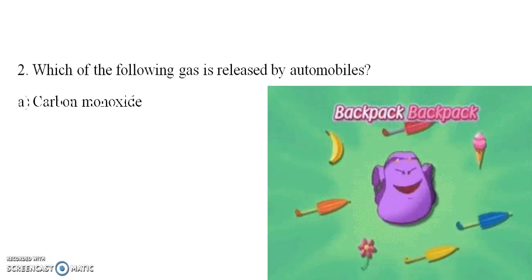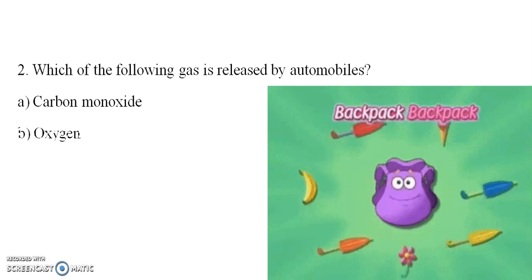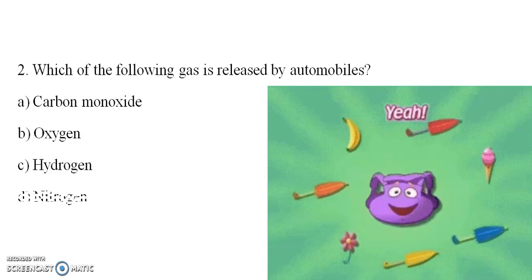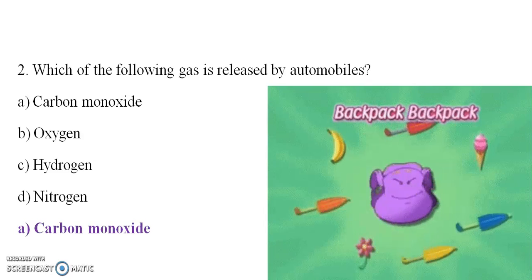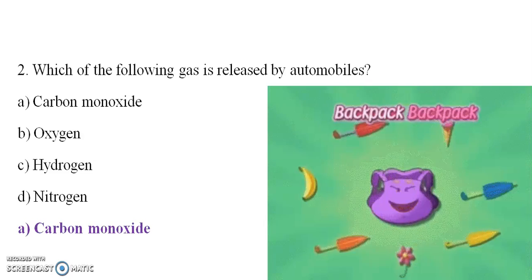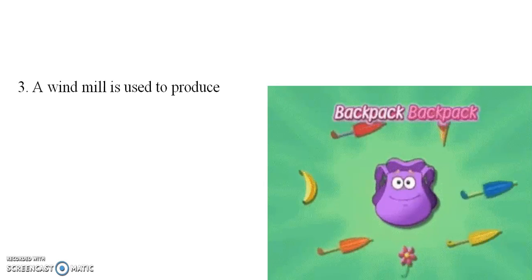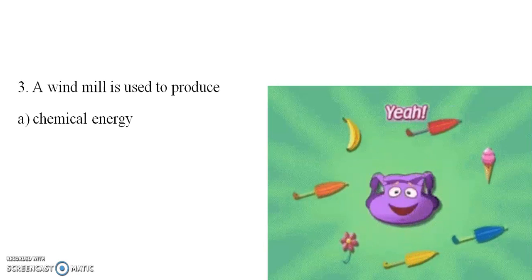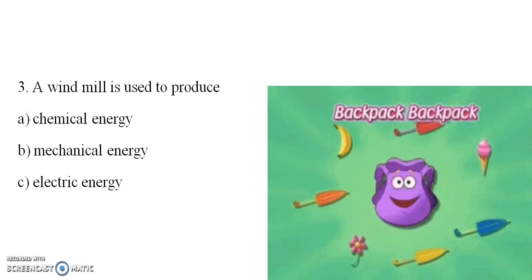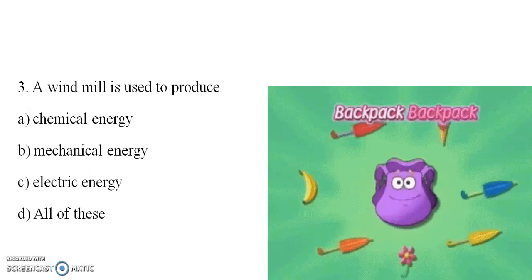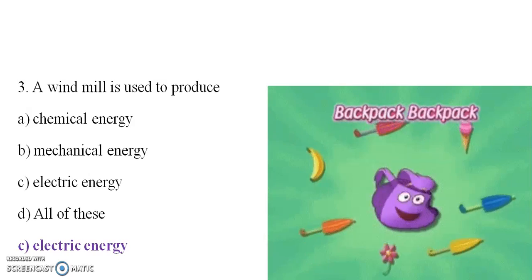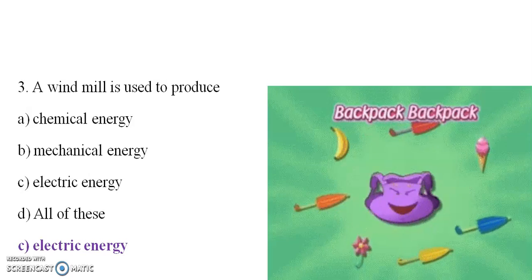Which of the following gas is released by automobiles? Carbon monoxide, oxygen, hydrogen, or nitrogen? Carbon monoxide is the answer. Windmill is used to produce chemical energy, mechanical energy, or electrical energy? The answer is electrical energy.